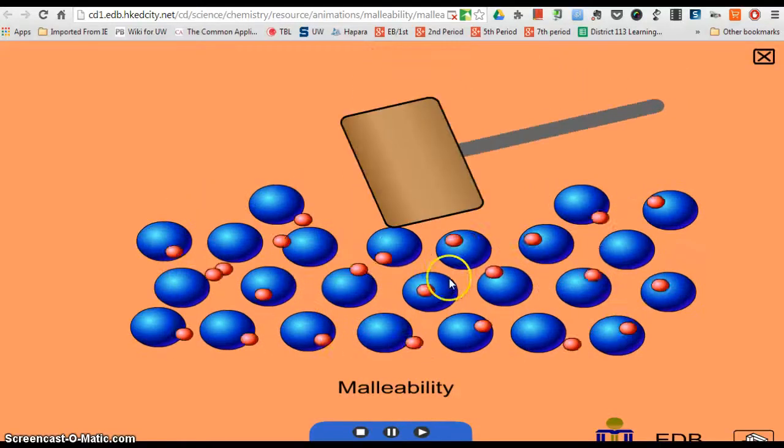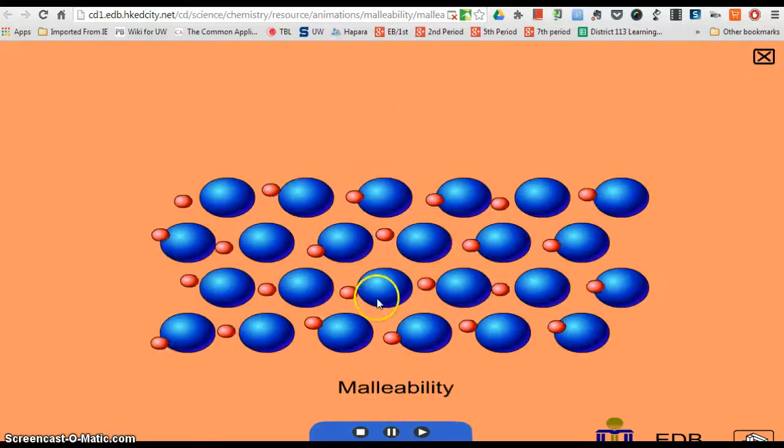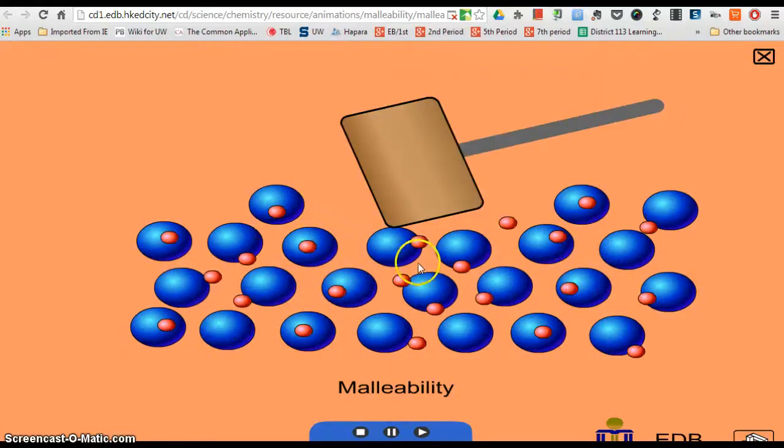Here are our atoms with the free-moving electrons. Oh my goodness, somebody hit it with a hammer. Why did it not break? Because the electrons were moving, and when the atoms move, the electrons can move with them, so they're still bonded together. So let's try that again. Here they're free-moving, I hit it with a hammer, and it doesn't break apart because the electrons can move with the atoms and still keep the bond going. So the moving bonds make the atoms able to move, and that's why it's malleable.